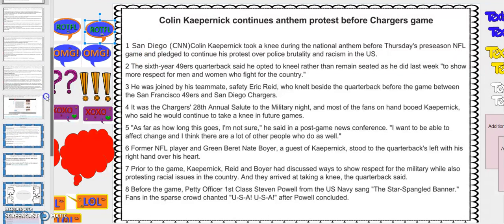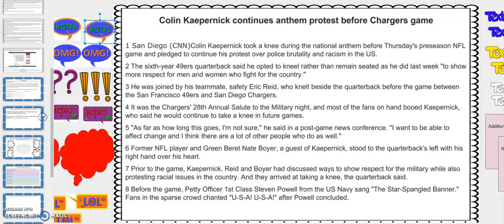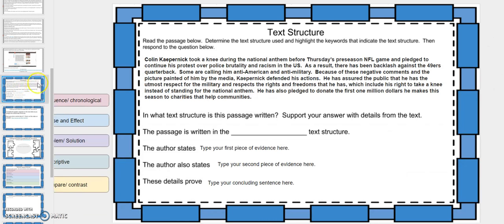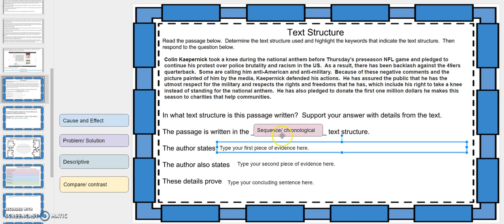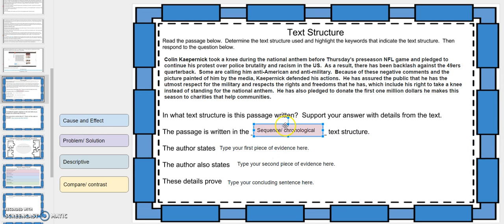Once you finish reading the entire article, there are several standards-based assignments that you're going to complete. The first one is about text structure — we'll be reviewing text structure on a regular basis. You're going to read the passage and then we're going to be writing, following our constructed response format. You'll read the question, drag whichever text structure you think is the answer here, and then type your answer right there. I'll give further instruction on this lesson in another video.